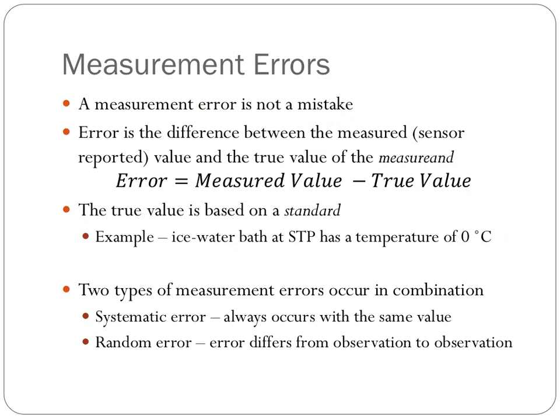There are two types of errors that can occur in combination with each other. The first type of error is what's called a systematic error. This error occurs all the time with the same value. So, for instance, if I take my temperature measuring device and place it in my ice water bath, and every time I do that it reads two degrees Celsius, I know that I have a systematic error of two degrees Celsius.